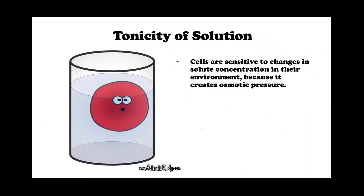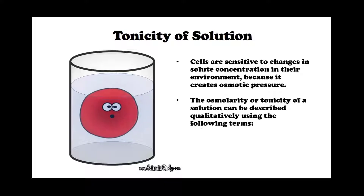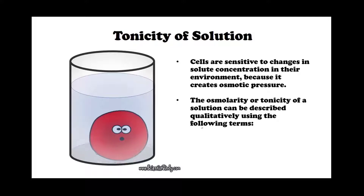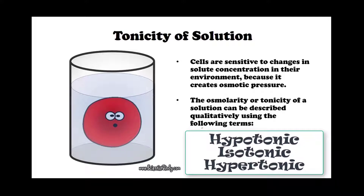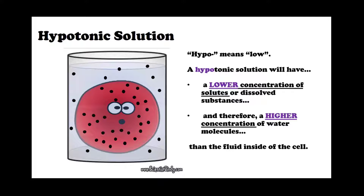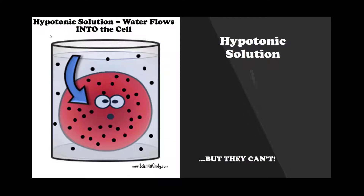There is a property called the tonicity of a solution. Cells are sensitive to changes in solute concentration in their environment because it creates osmotic pressure. The osmolarity, or tonicity, of a solution can be described qualitatively using the following terms: hypotonic solution, isotonic solution, and hypertonic solution. A hypotonic solution will have a lower concentration of solutes, or dissolved substances, and therefore will have a higher concentration of water molecules than the fluid inside of the cell.